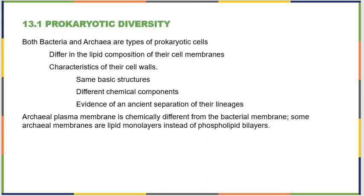Both bacteria and archaea are types of prokaryotic cells. They tend to differ in the lipid concentration of their cell membranes, though their cell walls share the same basic structures with different chemical components. When we study these chemical components, we get evidence of the ancient separation of their lineages — they did come from the same common ancestor, but it was a very long time ago.